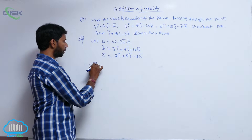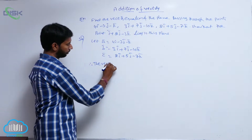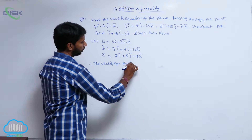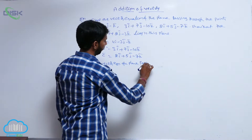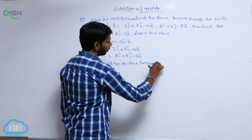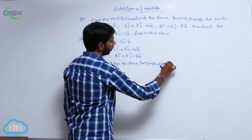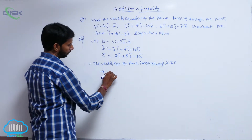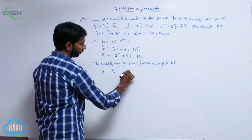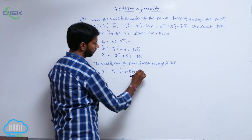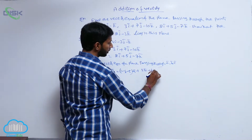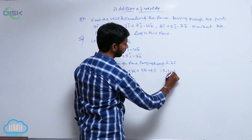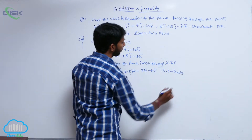Therefore, the vector equation of a plane passing through ā, b̄, c̄ is: r̄ = (1 - s - t)ā + sb̄ + tc̄, where t and s are scalars.